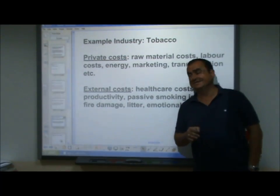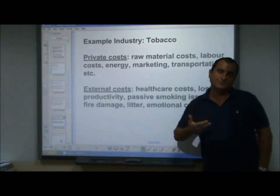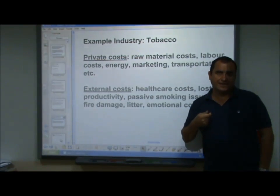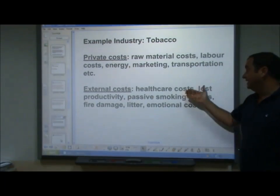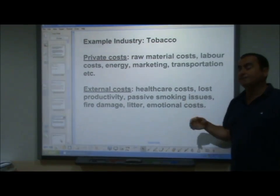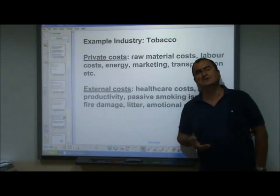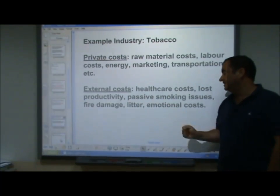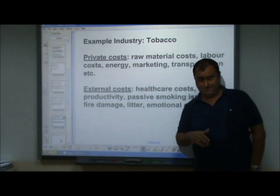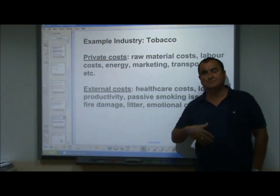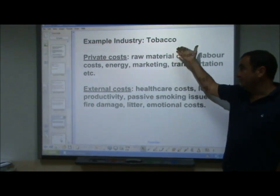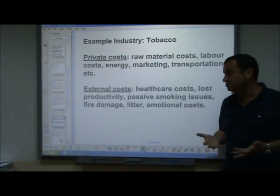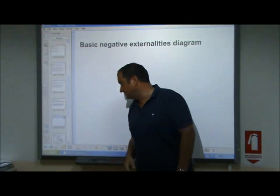These external costs are not paid by the buyers and sellers. Healthcare costs arise when people sick from tobacco use are hospitalised and use state healthcare, paid for by general taxpayers. There is also lost productivity as smokers are off sick, passive smoking issues where third parties get sick from tobacco smoke, fire damage, litter, and emotional costs suffered by those around smokers who see them get ill. Together these private and external costs make the social costs of the industry. Now let's look at a basic negative externality diagram.